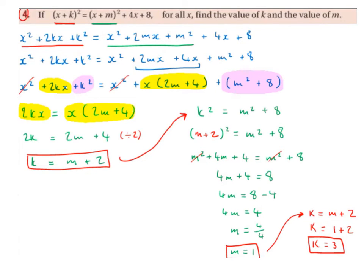Next, we cancel out the x squared on either side. Then we put like to like. On the left-hand side of the equals we have 2kx, and on the right-hand side we have x times (2m plus 4). So 2kx equals x times (2m plus 4). We can then ignore the x's and just bring down what's attached to them, which is 2k and 2m plus 4.